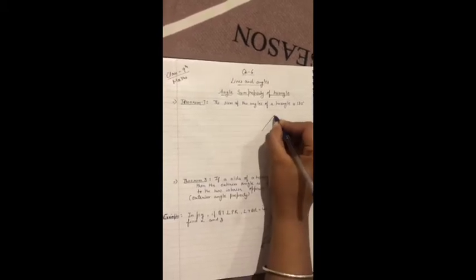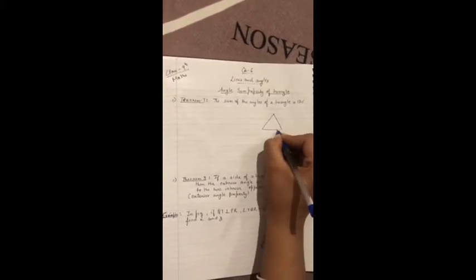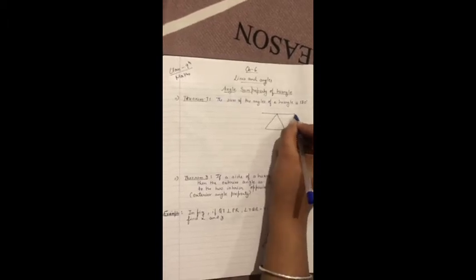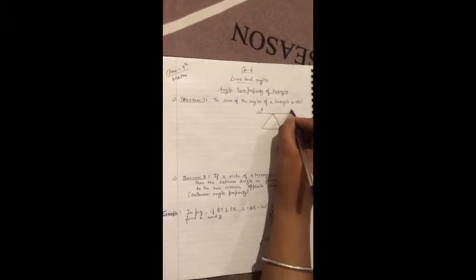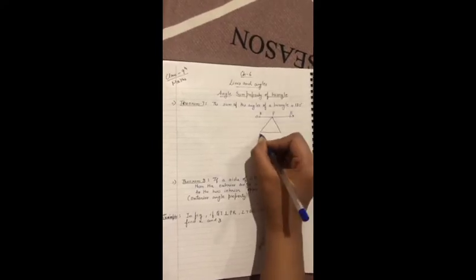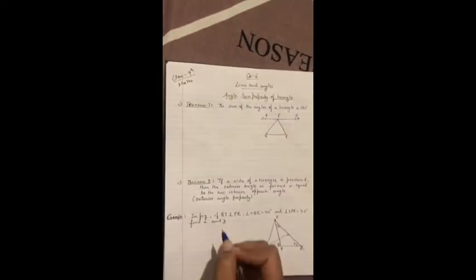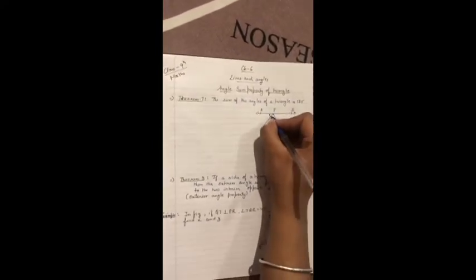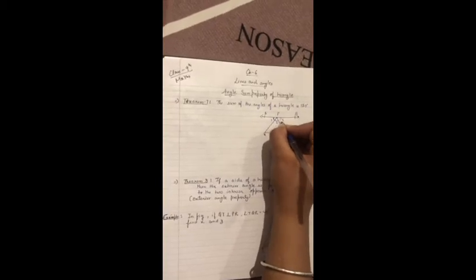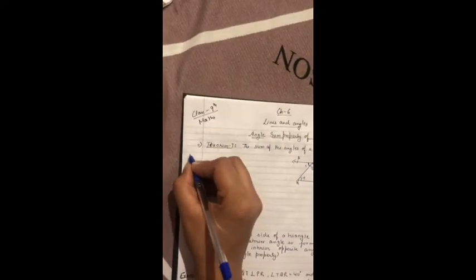We have to prove that. That is the line AB, PQR. I am making angle 1, 2, 3, 4, 5. So see how we will prove that.